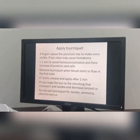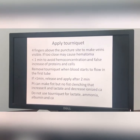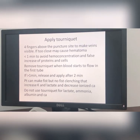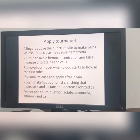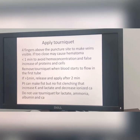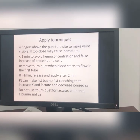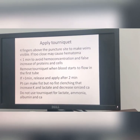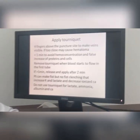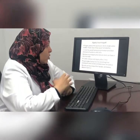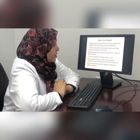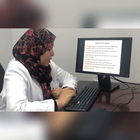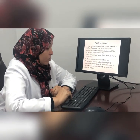Tourniquet should be applied a few fingers above the puncture site to make veins visible. If too close, it may cause a hematoma. It should not be applied for more than one minute to avoid hemoconcentration and an increase in proteins and cells. If applied for more than one minute, remove it and wait two minutes before reapplying. The patient can make a fist but not perform fist clenching — opening and closing the hand — as this will increase potassium and lactate and decrease ionized calcium. Don't use a tourniquet for lactate, ammonia, albumin, and calcium tests.